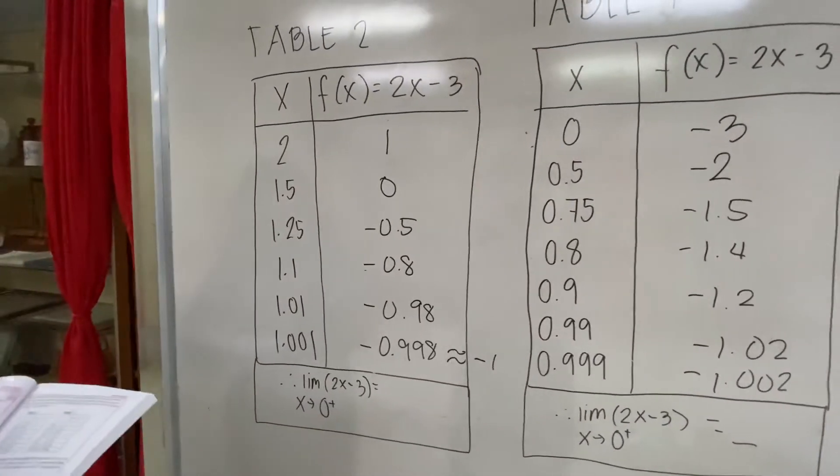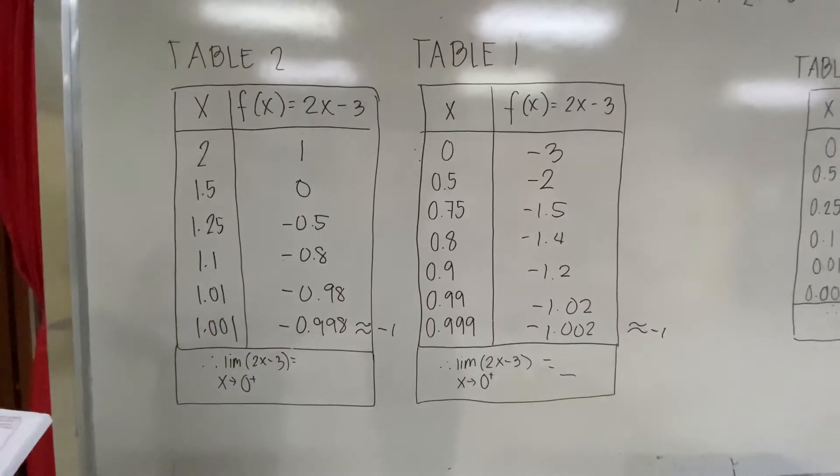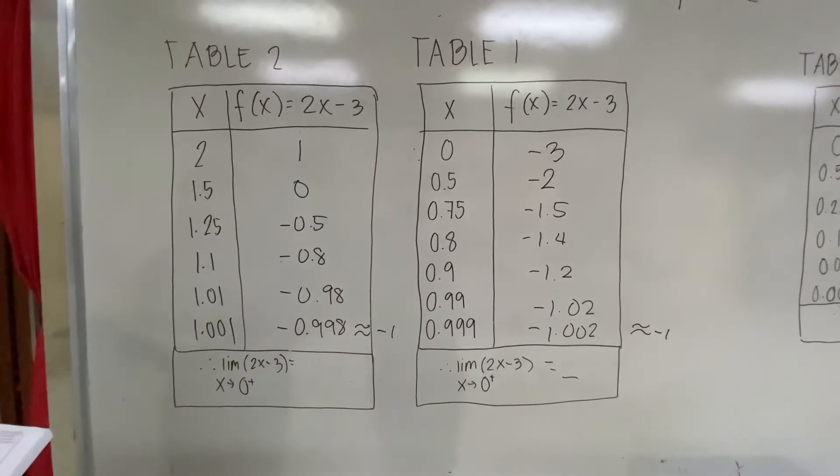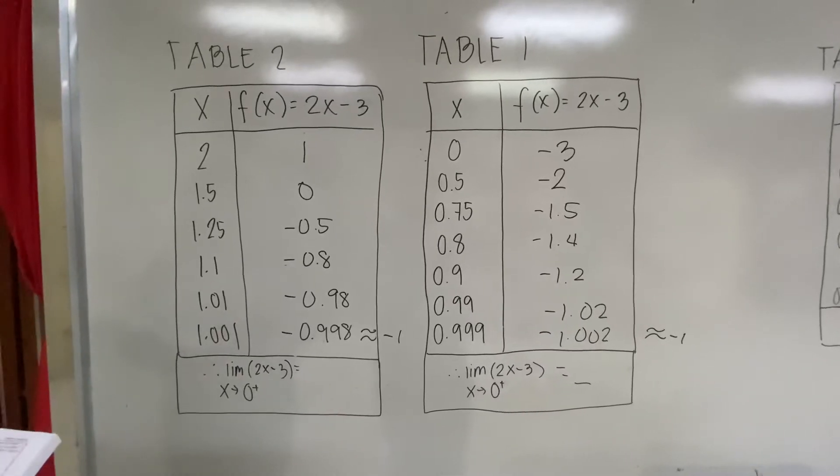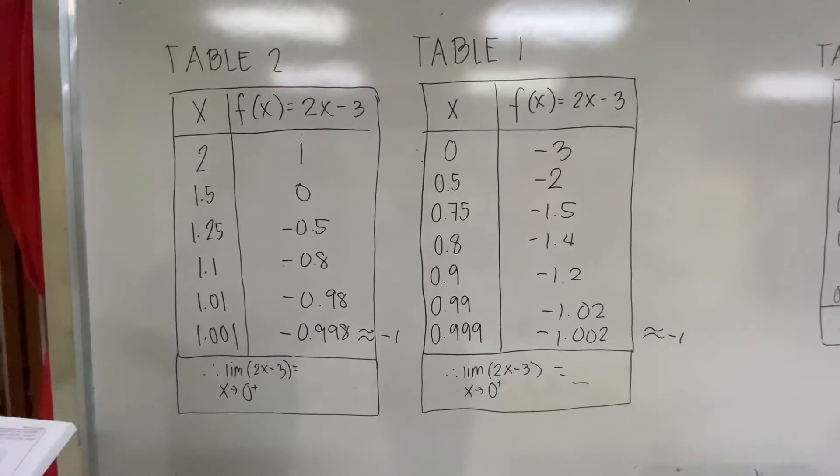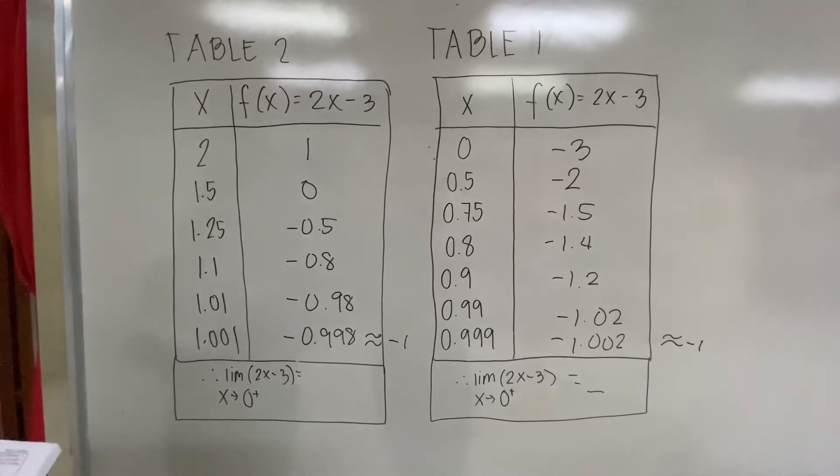In the two tables, we observe that as the values of x approach 1 from both the left and right, the values of f(x) also approach -1. Hence, we say that -1 is the limit of f(x) = 2x - 3 as x approaches 1.